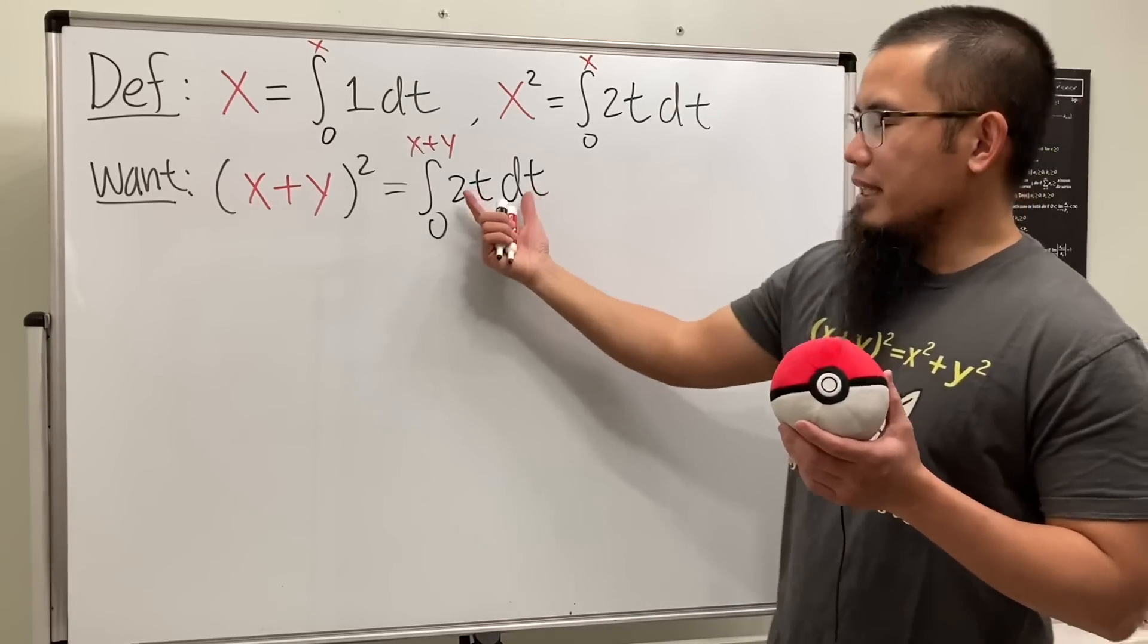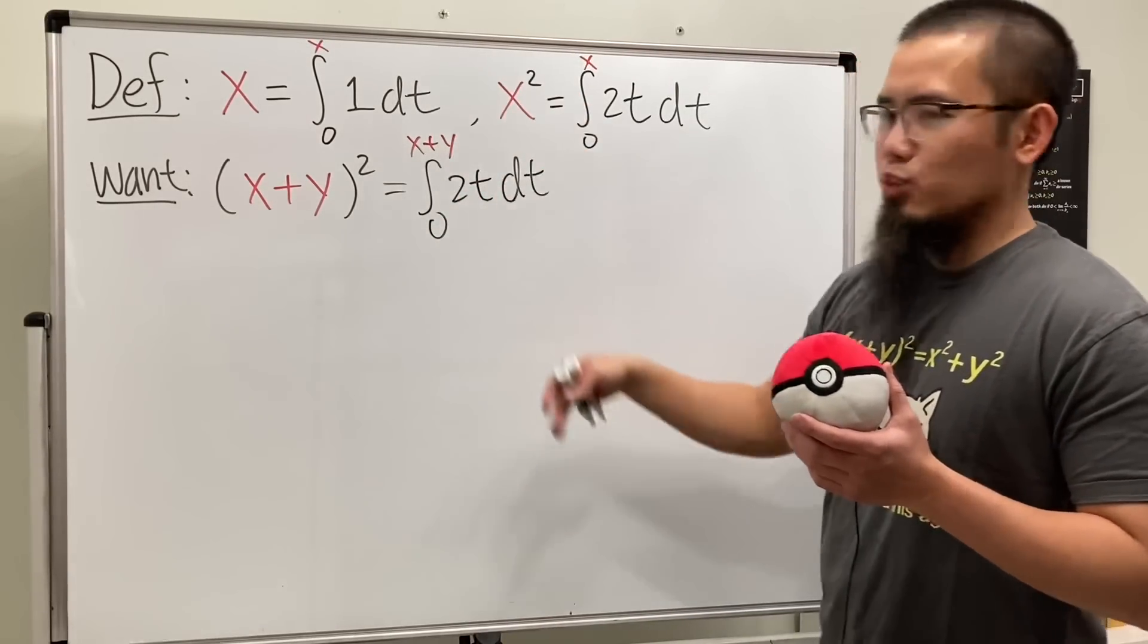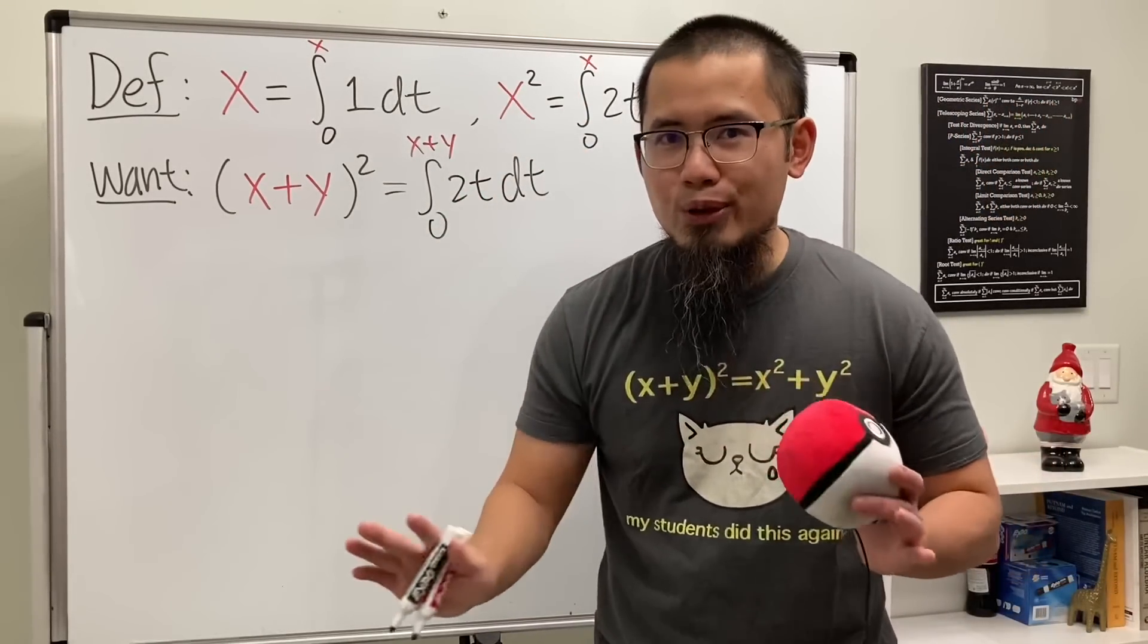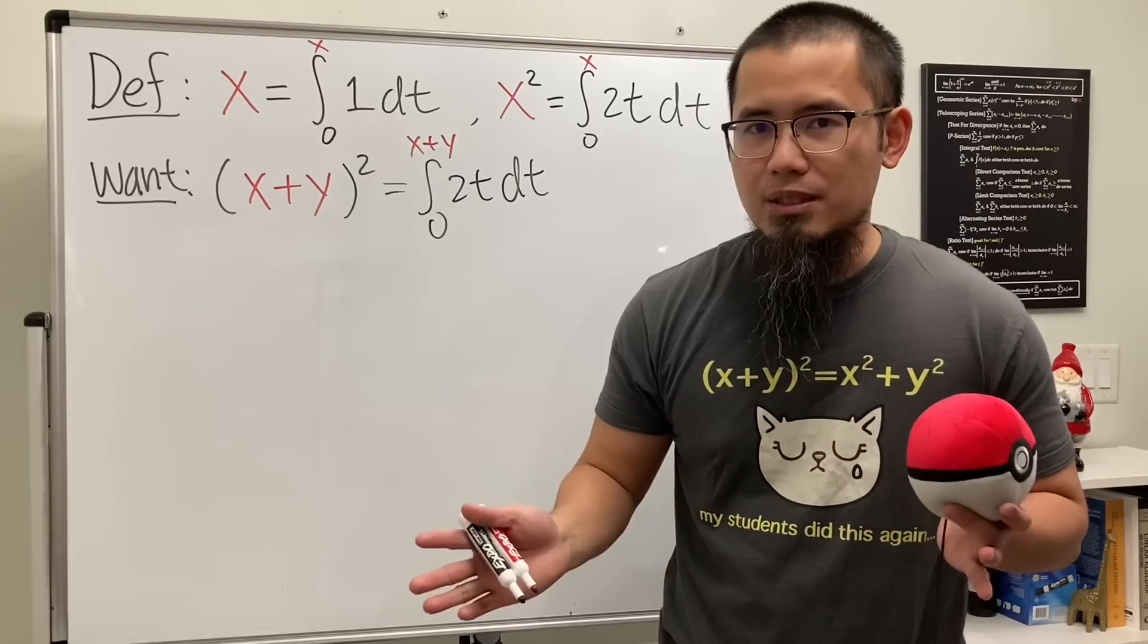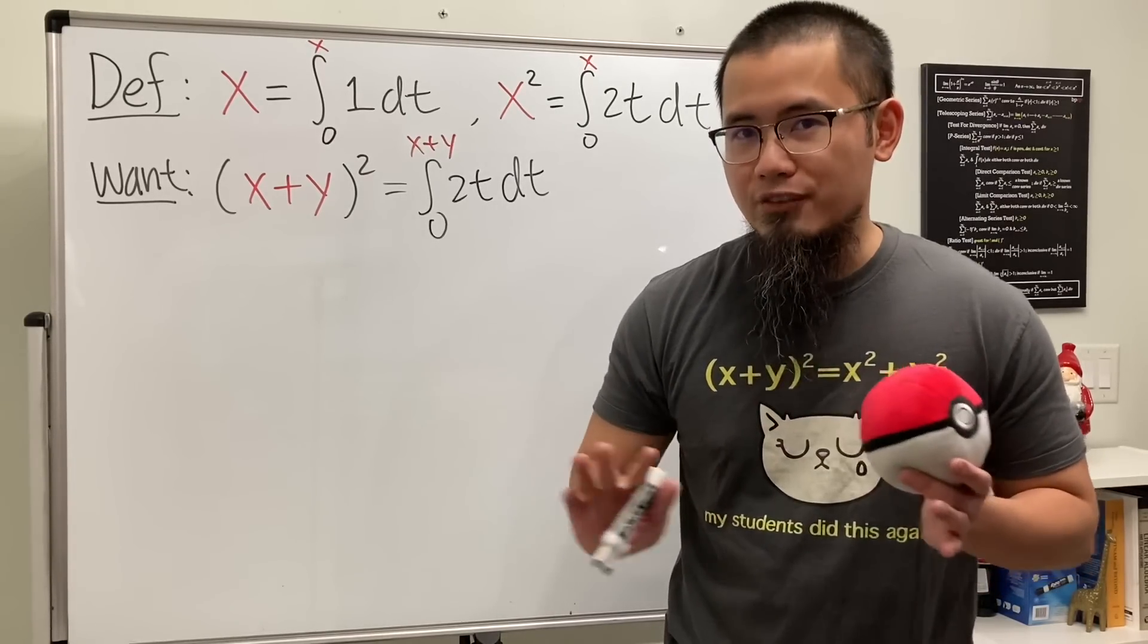And now, can we just go ahead and integrate this and plug in the x+y and expand it? No, we cannot do that, because otherwise that defeats the purpose. We cannot use the FOIL method.